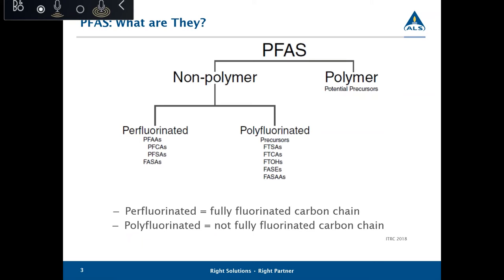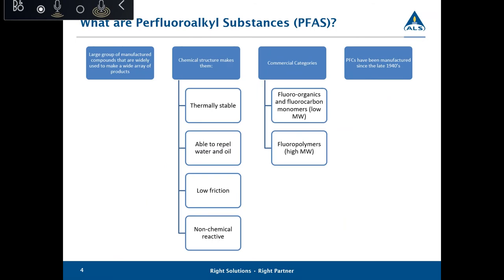PFAS includes thousands of compounds with varied uses and characteristics and environmental profiles. Today we're going to talk about a subset of PFAS — the per- and polyfluorinated compounds — also known as low molecular weight or long chain, short chain PFAS. These are PFAS with carbon chains that vary between four and fifteen carbons. These compounds have been in production since the late 1940s, with mass production starting about the late 1950s through today, and there are over 4,000 different PFAS that may have been manufactured and used in a variety of industries worldwide.